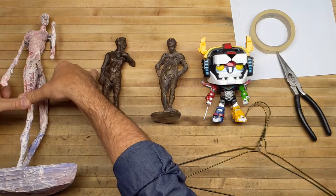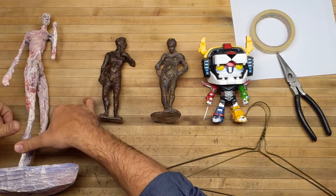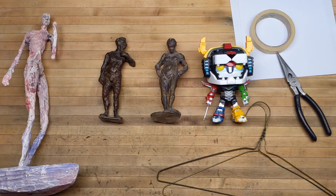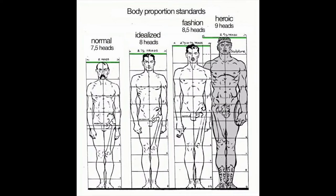This one's also maybe a thumb, so let's go one, two, three, four, five, six, seven, eight, nine, ten, eleven, twelve, thirteen, fourteen, fifteen - maybe fifteen or sixteen heads tall.